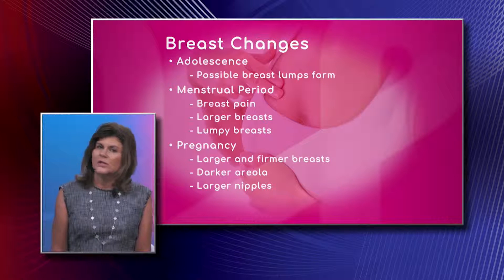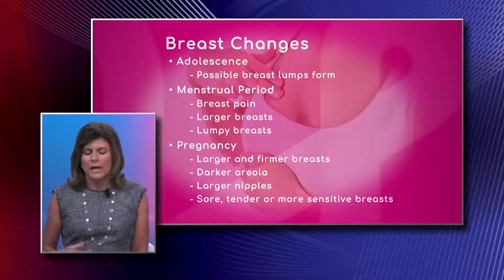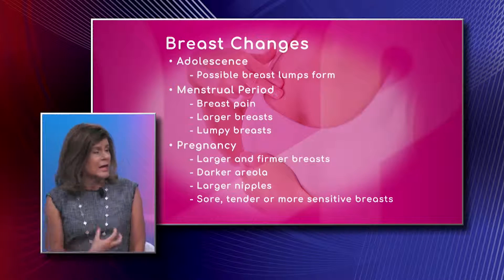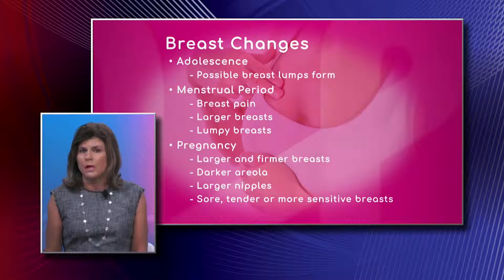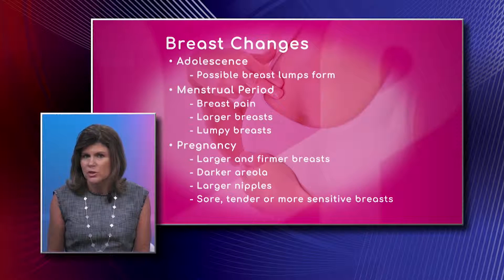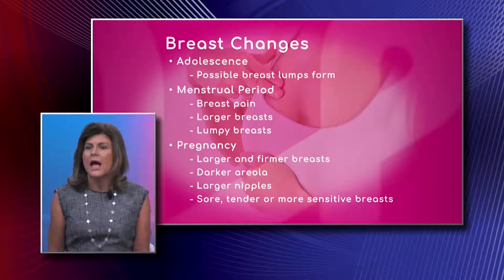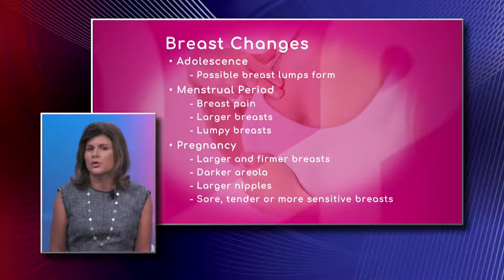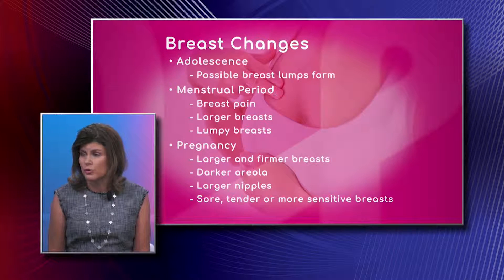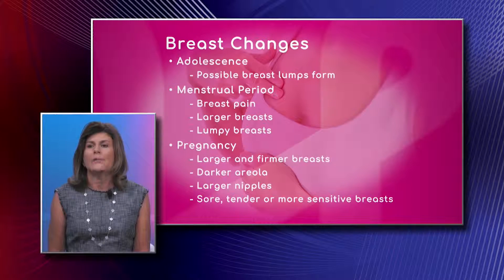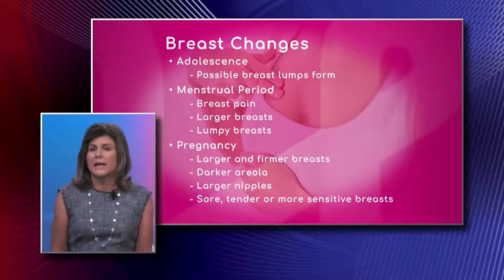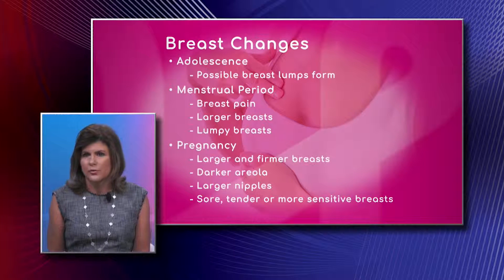When the ovaries start working and producing estrogen, we can have some of that fatty tissue deposit in the connective tissue, which causes enlargement or growth of the breasts. The ductal system of the breast also starts to grow. During this time, it's possible for benign breast lumps to form.